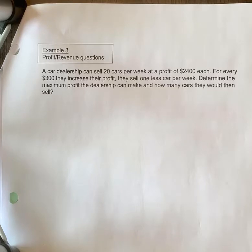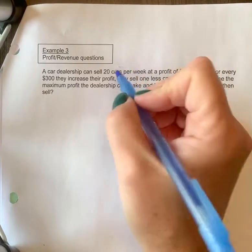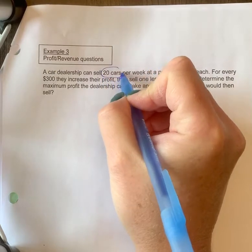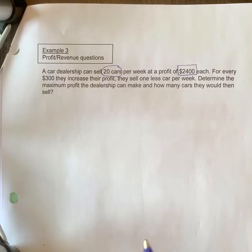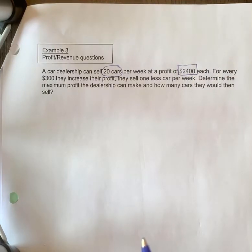A car dealership can sell 20 cars per week at a profit of $2,400 each. So I'm going to circle this—it's got to be one unit, cars—and then money I'm going to put in a box, making it a different shape. Okay, for every $300 they increase their profit, they sell one less car per week, which